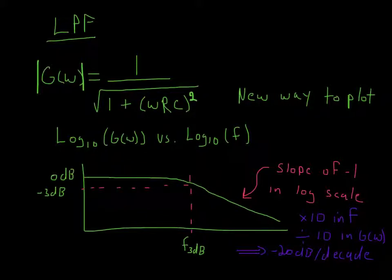So basically, this is a new way to plot that curve that we saw in the last screencast, and that new way is going to be, if we plot it on a log-log scale, instead of the gain being 1, it's 0 dB, and this is why we have the F3 dB point.